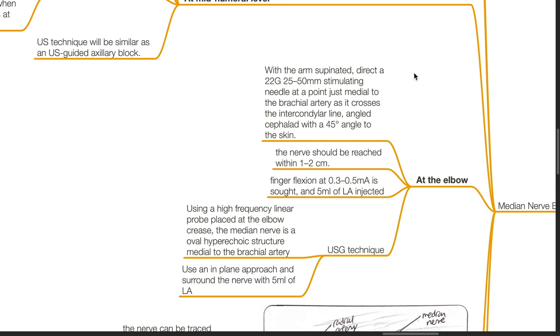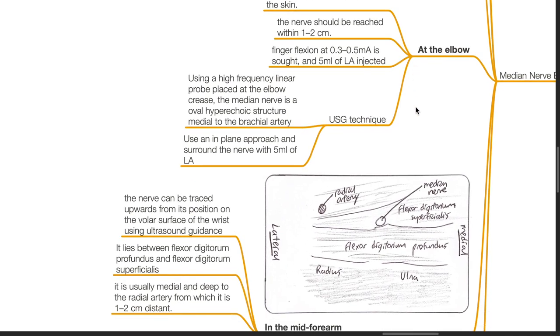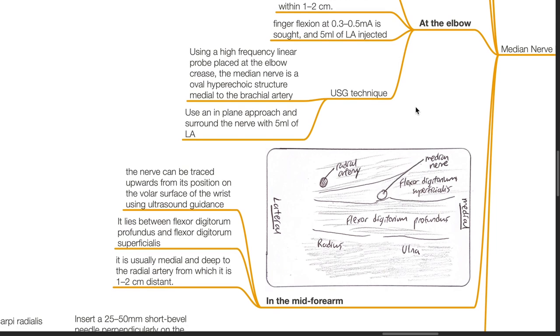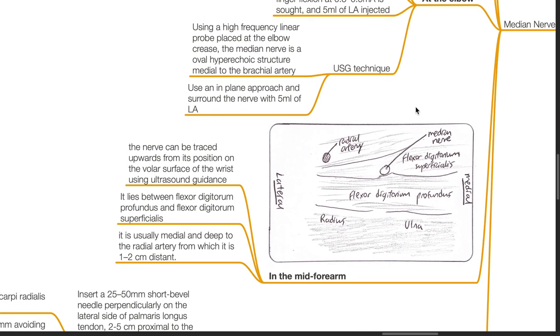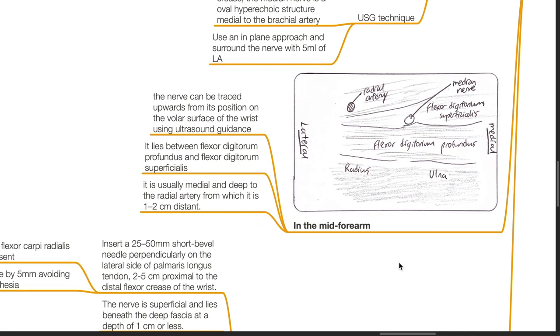Ultrasound technique: using a high-frequency linear probe placed at the elbow crease, the median nerve is an oval hyperechoic structure medial to the brachial artery. Use an in-plane approach and surround the nerve with 5 mL of local anesthetic. In the mid forearm, the nerve can be traced upwards from its position on the volar surface of the wrist using ultrasound guidance. It lies between the flexor digitorum profundus and the flexor digitorum superficialis. It is usually medial and deep to the radial artery from which it is 1 to 2 cm distant.